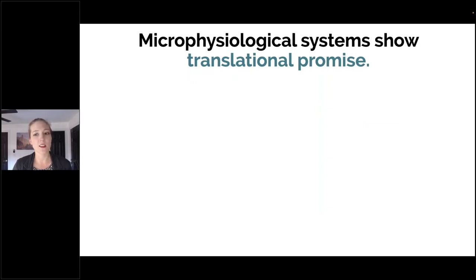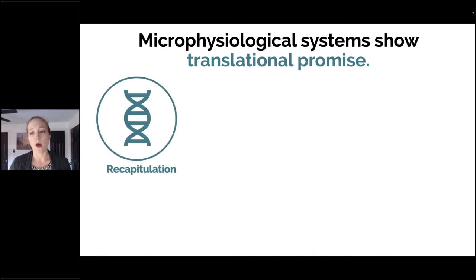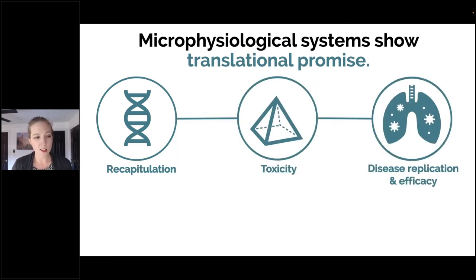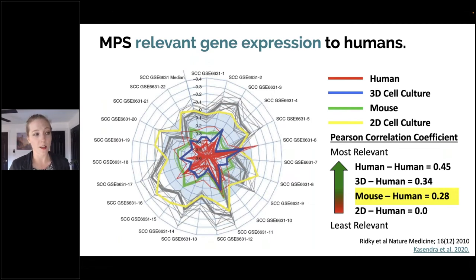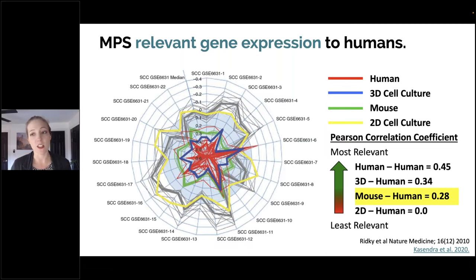MPS do show translational promise. They can recapitulate important aspects of human or animal systems, and can be really good for toxicity, disease replication, and efficacy. If we're using a human MPS system, it will have much more relevant gene expression to humans than other animals. A figure showing gene expression correlation coefficients clearly demonstrates that 3D cell culture models are much closer to human expression than mouse models or traditional 2D in vitro cell culture.